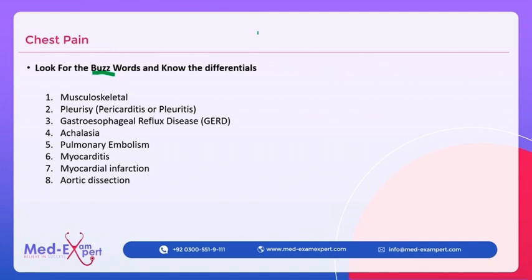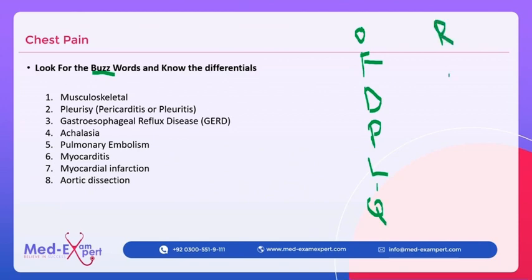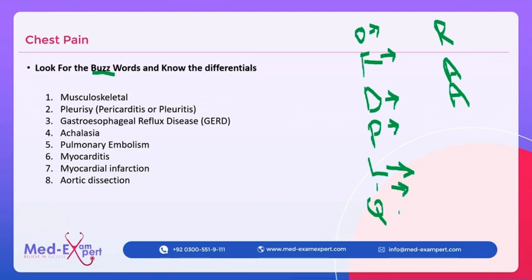The most important thing is a good history of chest pain. The mnemonic to remember is: Onset, frequency, how many times, duration, progression, intensity, quality, radiation, aggravating and alleviating factors, and associated features.